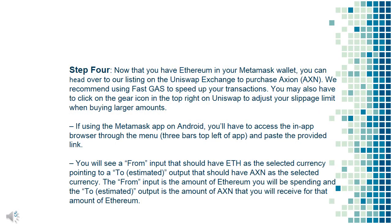Step 4: Now that you have Ethereum in your Metamask wallet, you can head over to our listing on the Uniswap exchange to purchase Axion. We recommend using FastGas to speed up your transactions. You may also have to click on the gear icon in the top right on Uniswap to adjust your slippage limit when buying larger amounts. If using the Metamask app on Android, you'll have to access the in-app browser through the menu — 3 bars top left of the app — and paste the provided link.